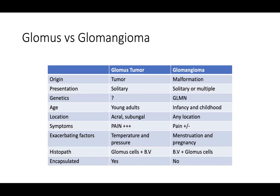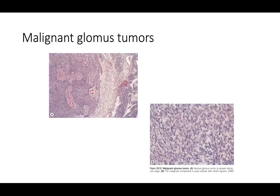Glomus tumors are typically more painful; glomangiomas may have some pain but less so. Exacerbating factors for glomus tumors include temperature and pressure, whereas for glomangiomas it is menstruation and pregnancy. On pathology, glomus tumors show glomus cells with blood vessels; in a glomangioma it is more blood vessels with glomus cells. Glomus tumors are usually encapsulated, glomangiomas are not. Malignant glomus tumors are rare but must be considered if you see significant mitotic figures and nuclear pleomorphism.